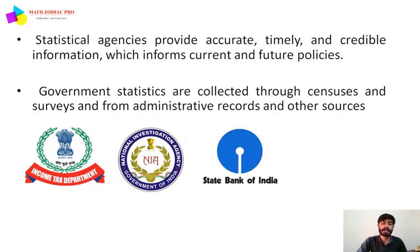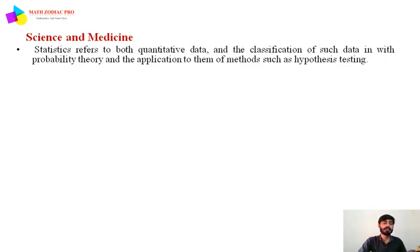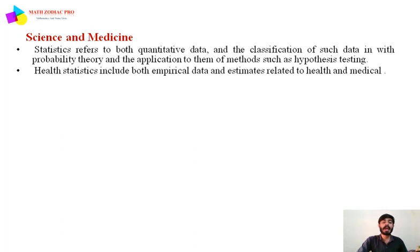Next is science and medicine. Statistics refers to both quantitative data and the classification of such data with probability theory, and the application to them of methods such as hypothesis testing. Health statistics include both empirical data and estimates related to health and medical topics.